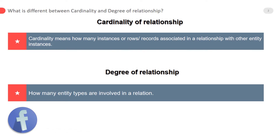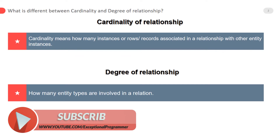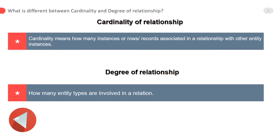Cardinality refers to how many records are associated in a relationship with other entity instances — one or more records may be associated in a relation with other entity instances. Degree of relationship, on the other hand, refers to how many entity types are involved in a relation.